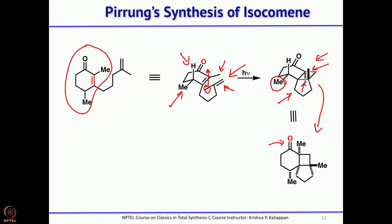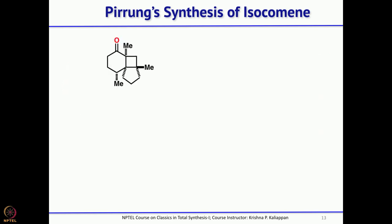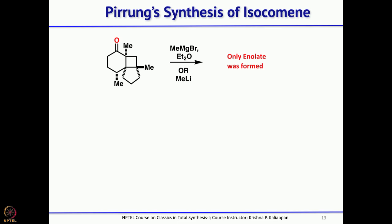Next, a methyl Grignard or methyl lithium needed to be added to get the tertiary alcohol, followed by acid treatment to generate the carbocation for Wagner-Meerwein rearrangement. Unfortunately, both methyl magnesium bromide and methyl lithium acted as base rather than nucleophile — only the enolate was formed. Alternatively, a simple methyl Wittig reaction gave the precursor for the Wagner-Meerwein rearrangement, and treatment with para-toluenesulfonic acid gave isocomane directly.